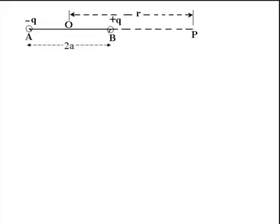In this diagram, you can see that the two charges: minus Q is kept at point A, plus Q is kept at point B. The distance between AB is written as 2A, and you know ABP is an axial line.